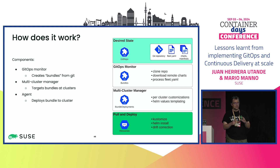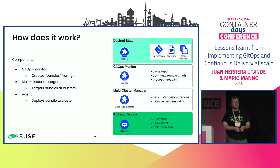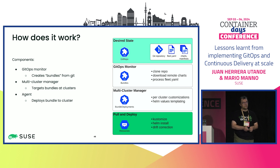On the downstream side, we have a very small agent. The agent pulls targeted bundles from the control plane and uses Helm to install them. The nice thing is we don't need any CRDs on the downstream clusters — it's just one controller.